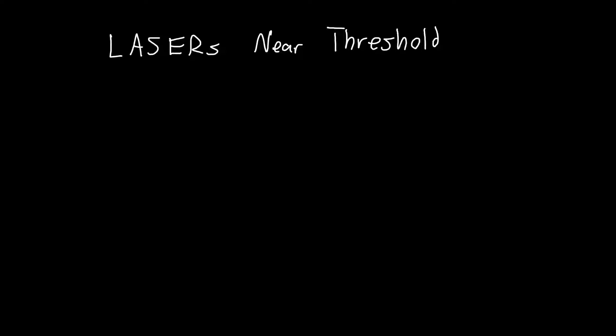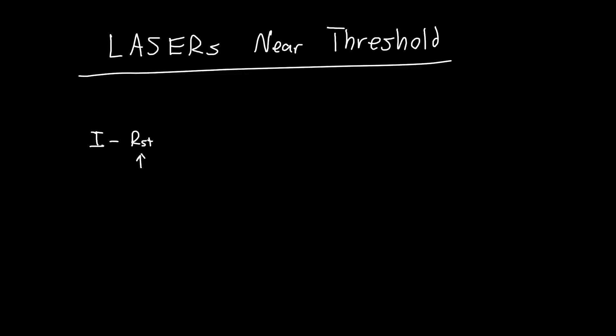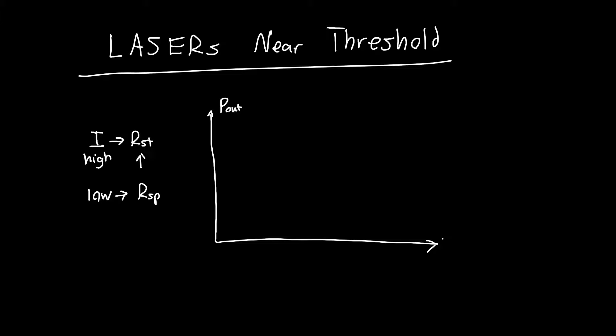In this video we're going to talk about lasers near threshold. We figured out in previous videos what happens when the injected current is very high — when stimulated emission is the dominant term — and when we had low current, our spontaneous emission was dominant. We figured out that the LI curve, or the output power as a function of input current, looked something like this.